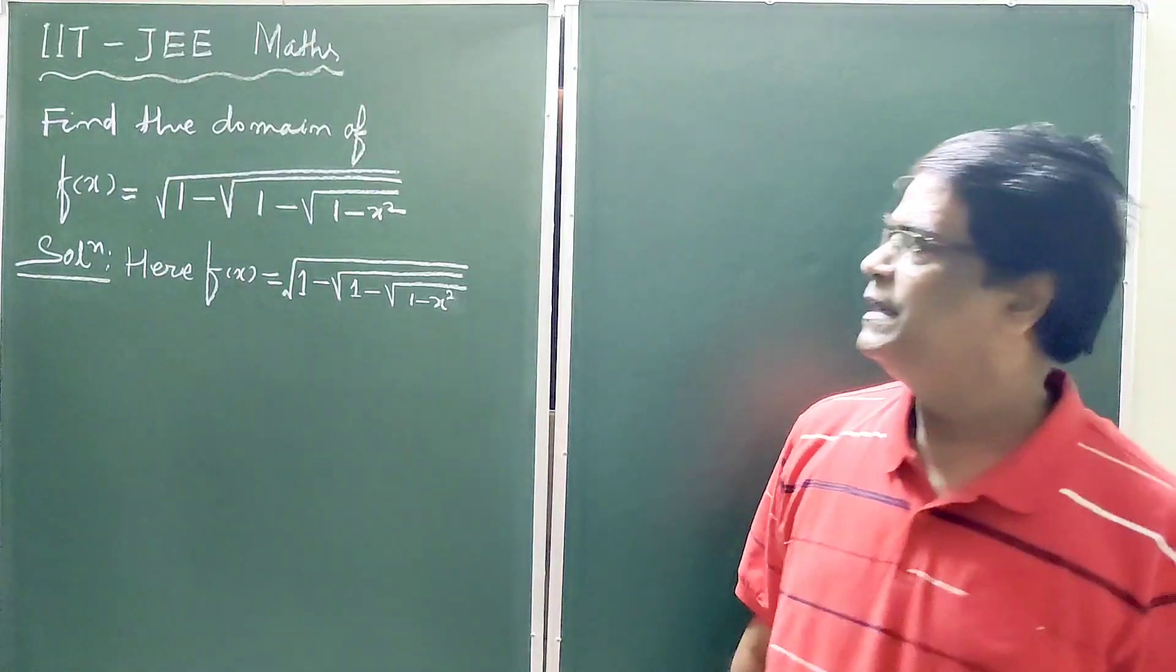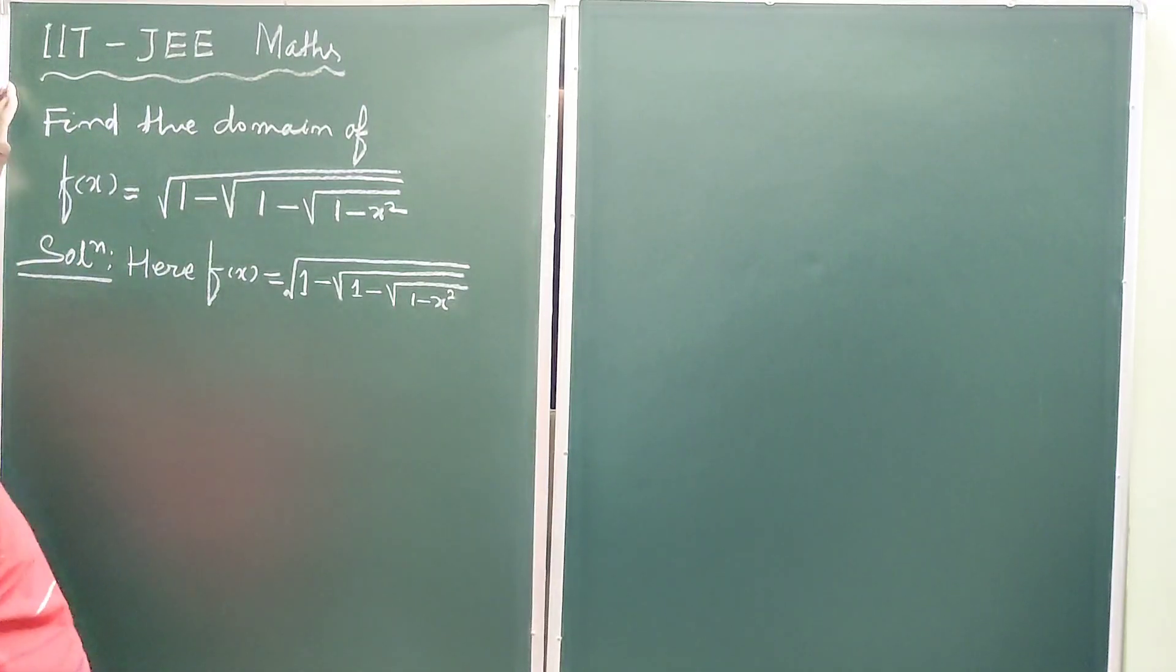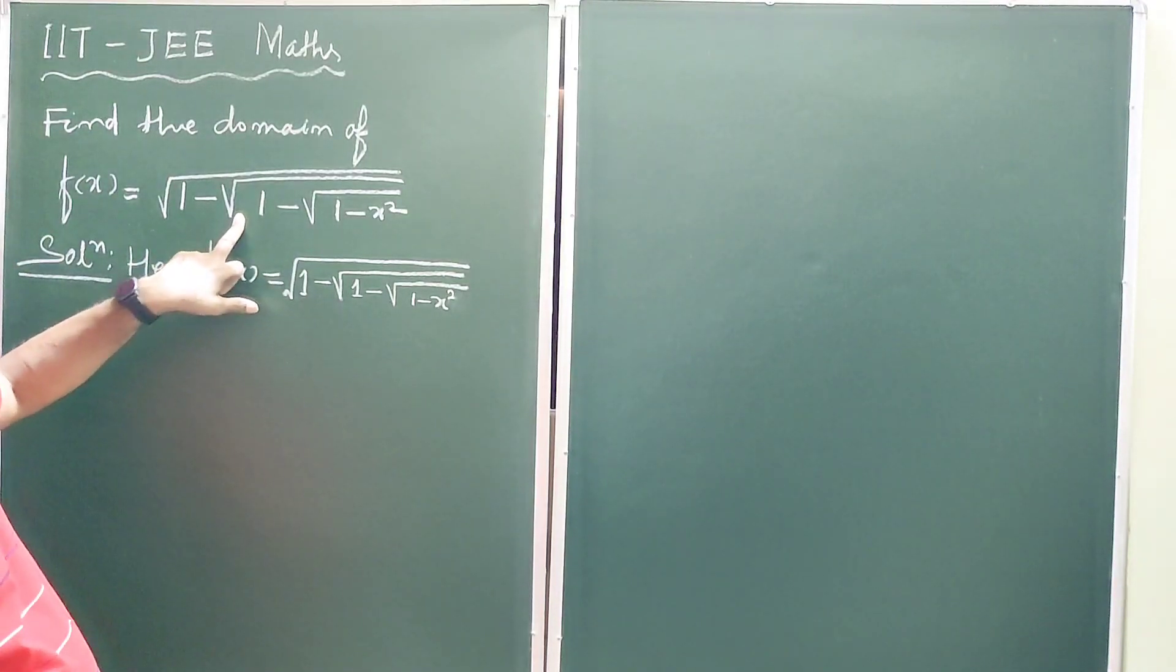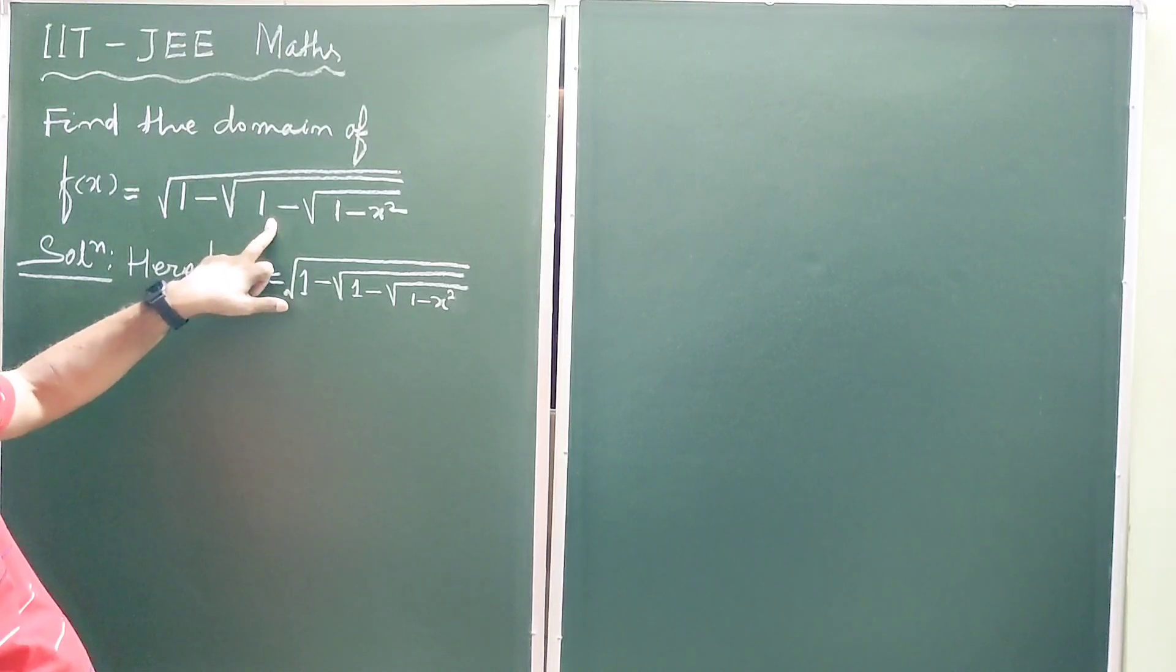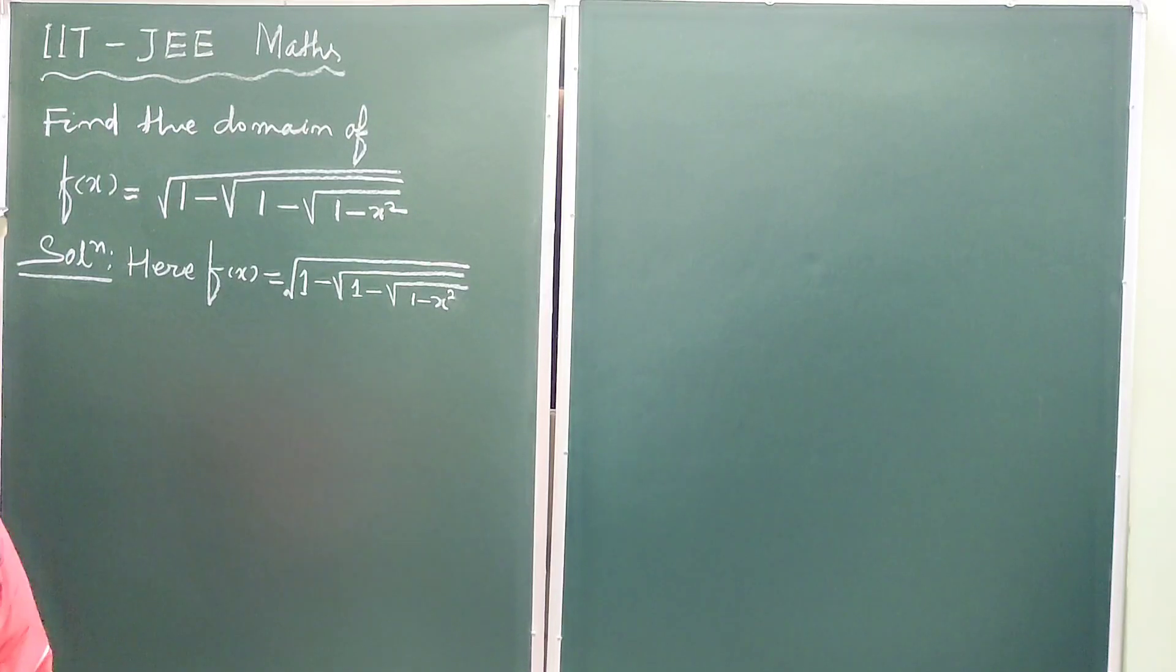Hello students, in this class let us find the domain of f(x) which is equal to √(1 - √(1 - √(1 - x²))). So this is the question, and we have to find the domain of the function.